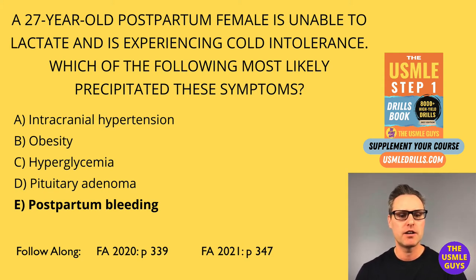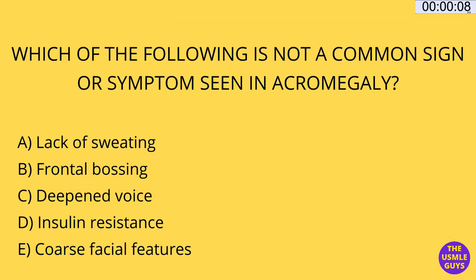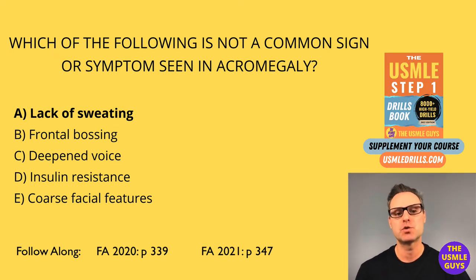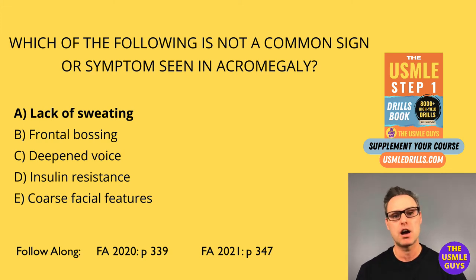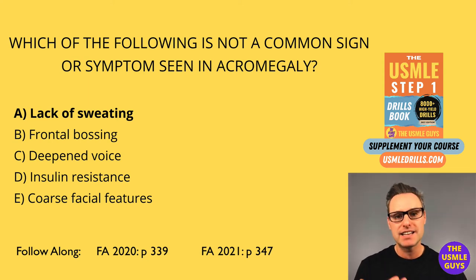Let's move on to the next question — as always, pause the video and come on back when you think you've got the right answer. The correct answer here is A, lack of sweating. The answer is A because, in fact, excessive sweating is a common feature of acromegaly. So let's talk about acromegaly, which is caused by excessive secretion of GH in adults.